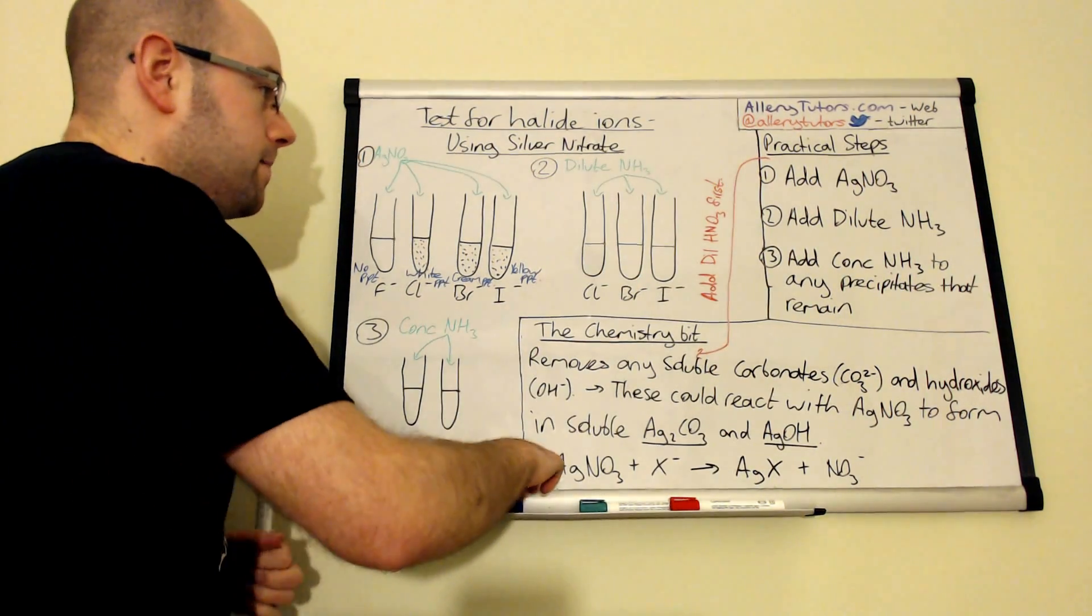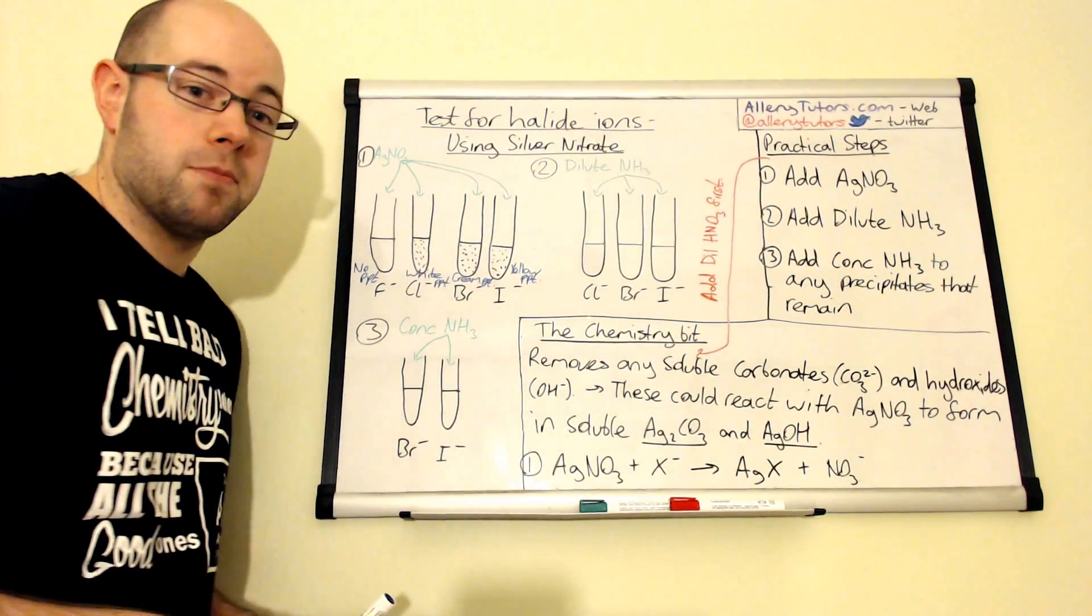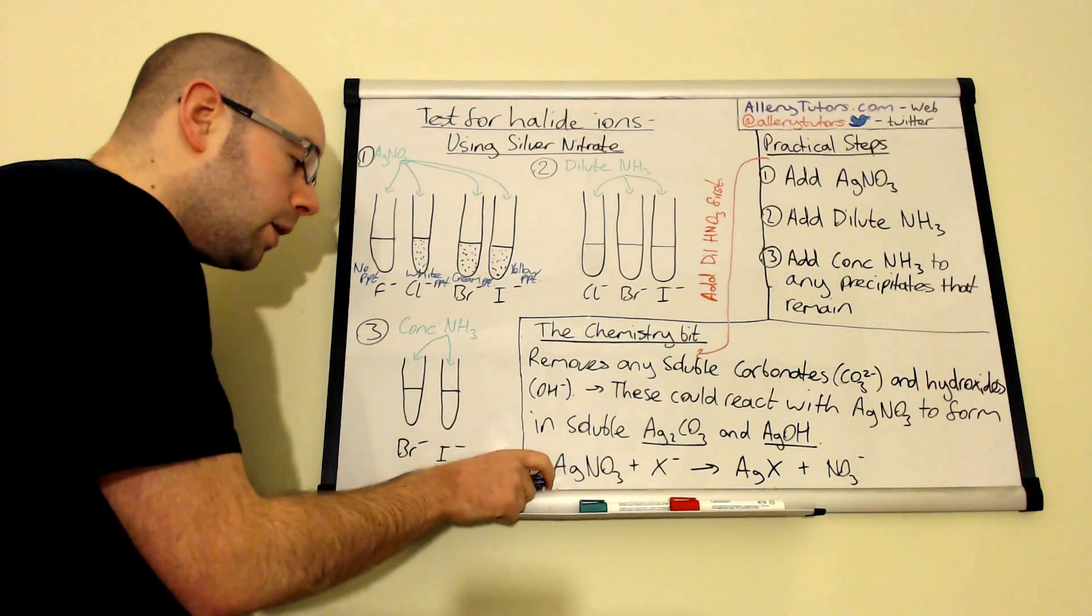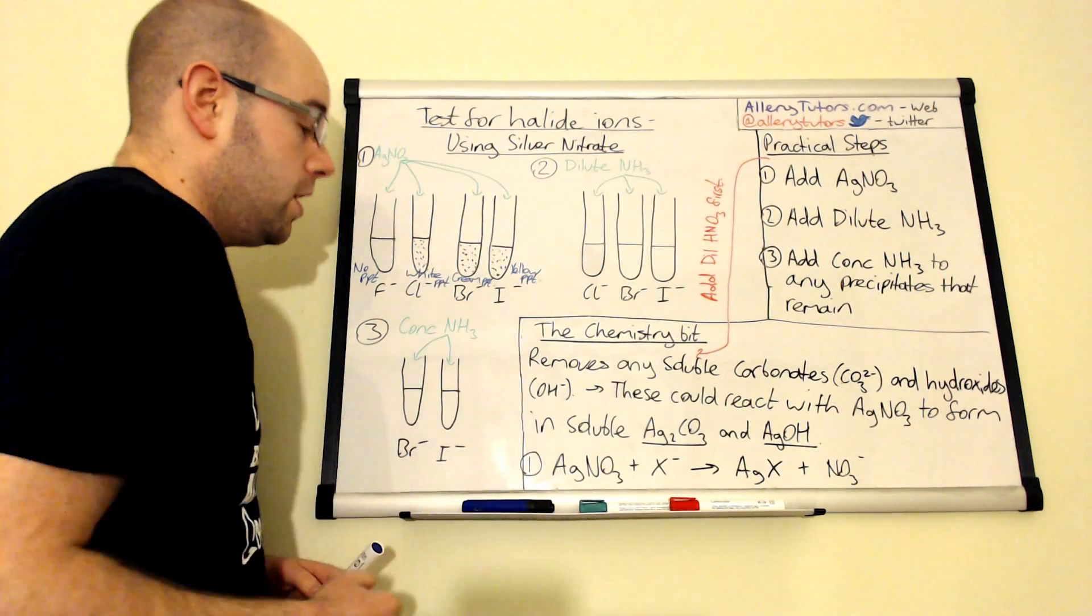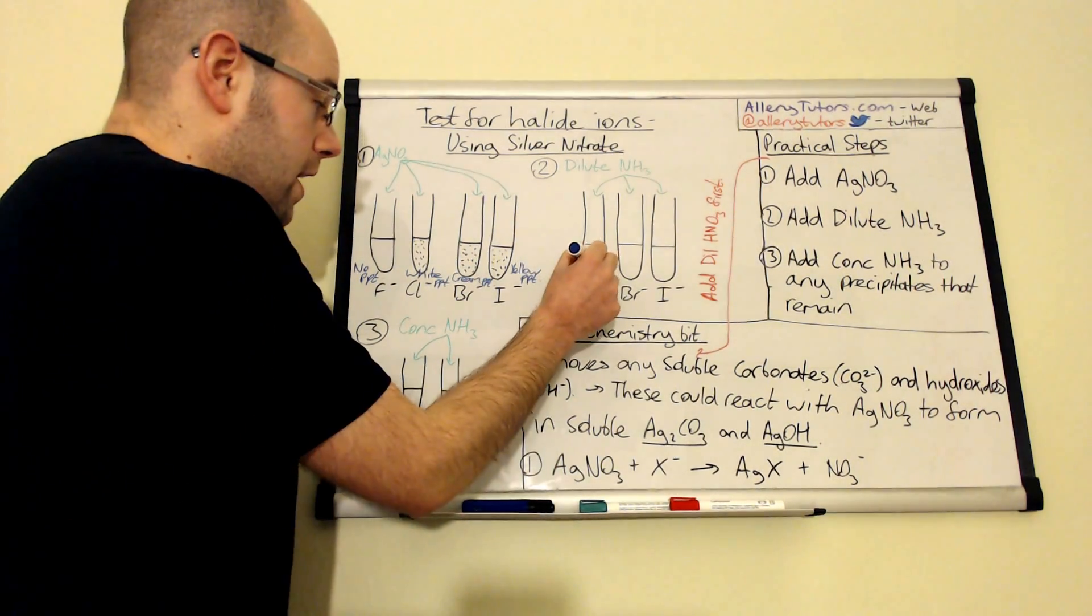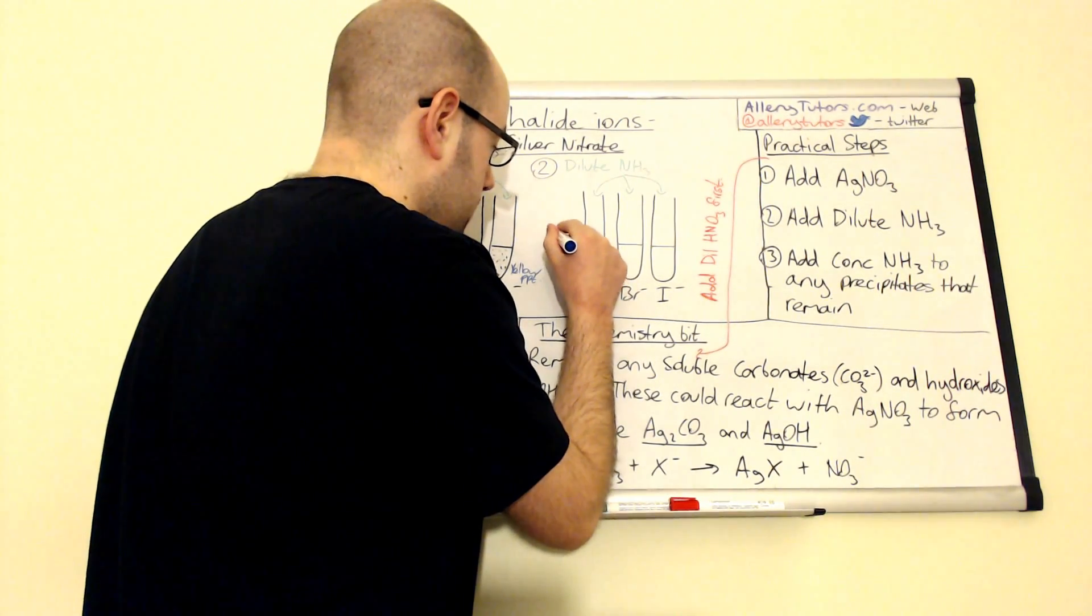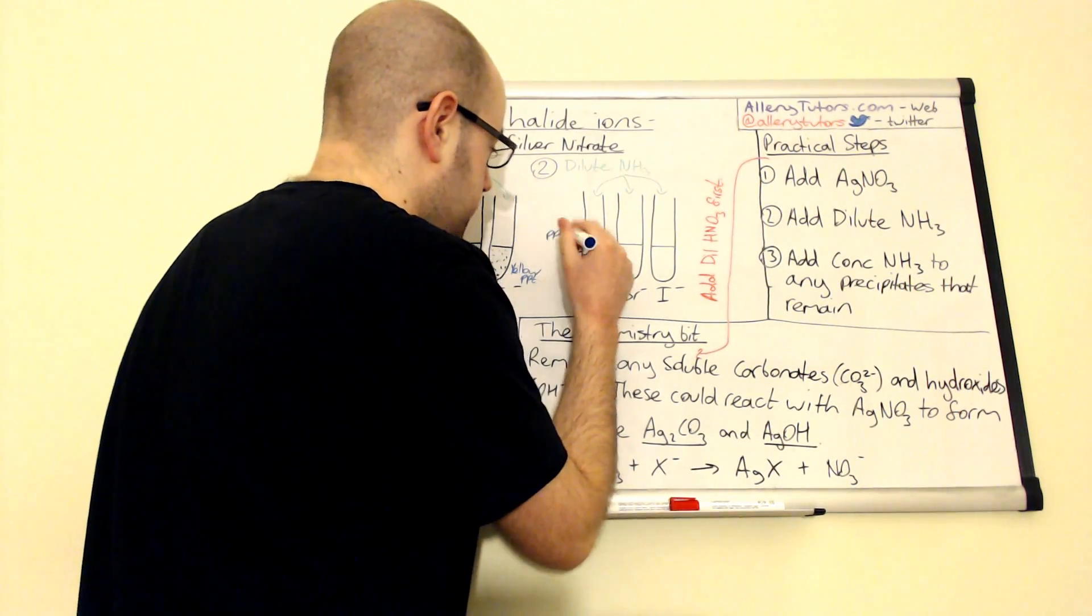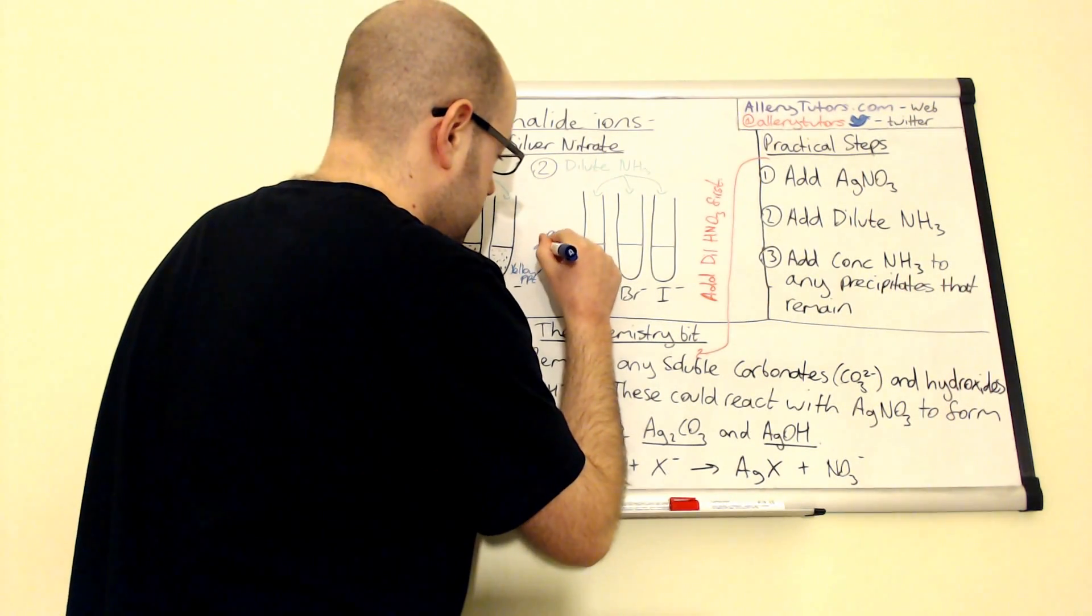In here, we have our precipitates. We take these precipitates and we add dilute ammonia to them first. What you should see, when you add dilute ammonia after step one, is that actually with your chlorides, this stuff in here should disappear. So I'll put precipitate disappears or we can say dissolves.